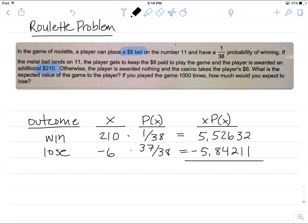Now what I'm going to do with that fourth column is to add those values. And when I add those two values, you can see one's positive, one's negative, what I'm going to get is negative 0.31579.